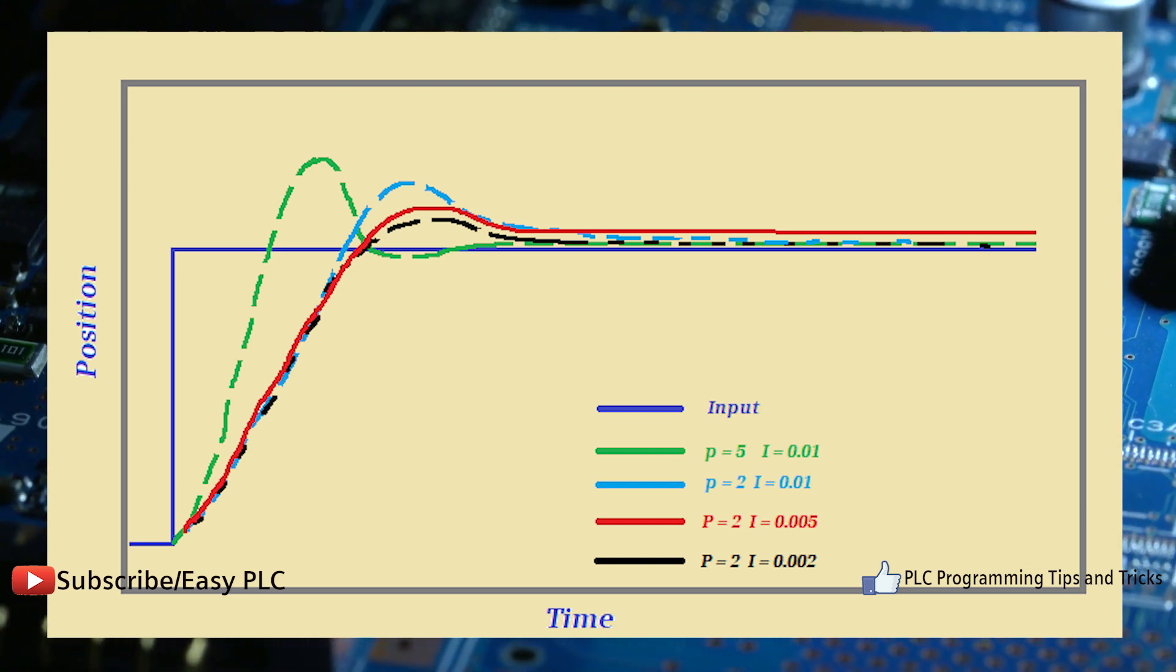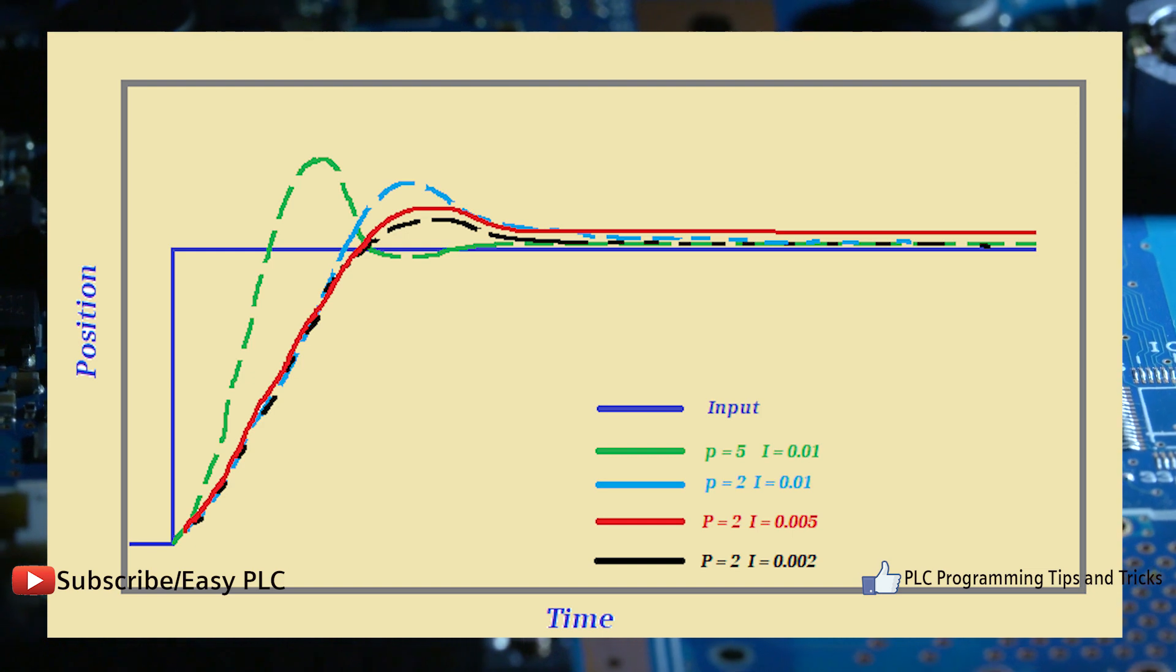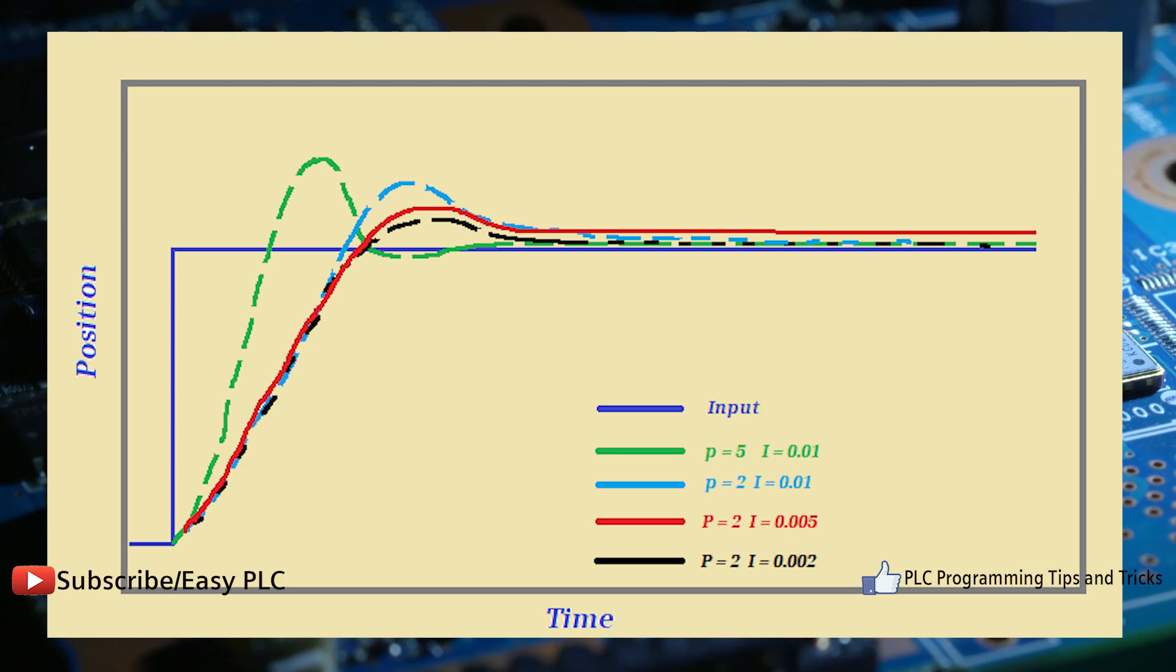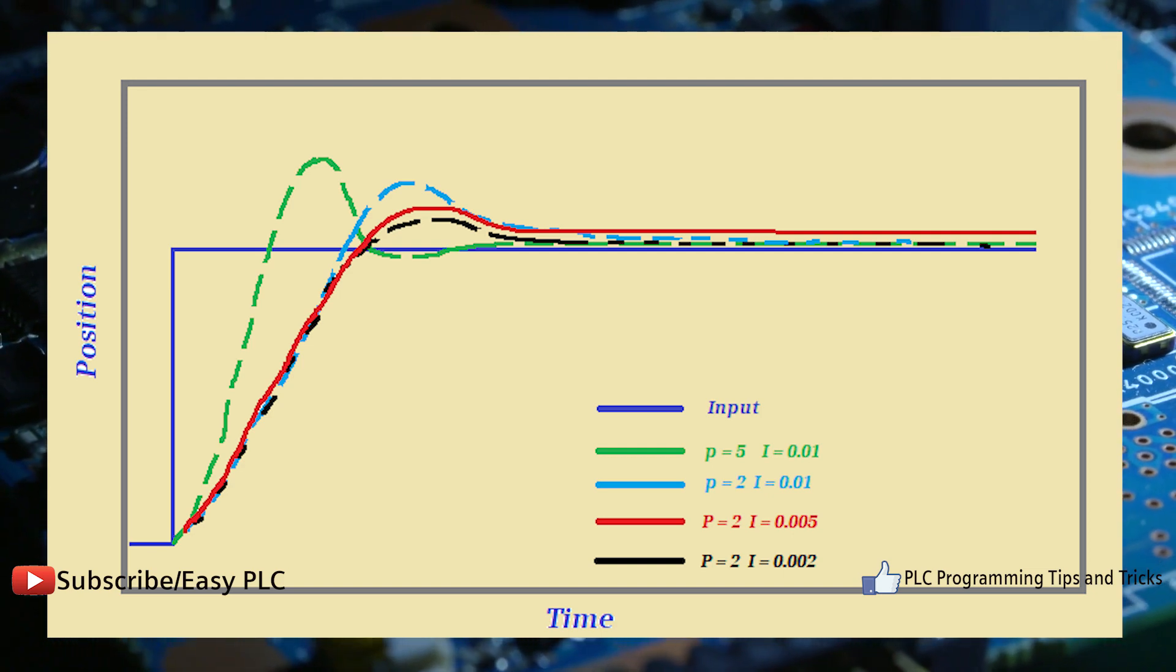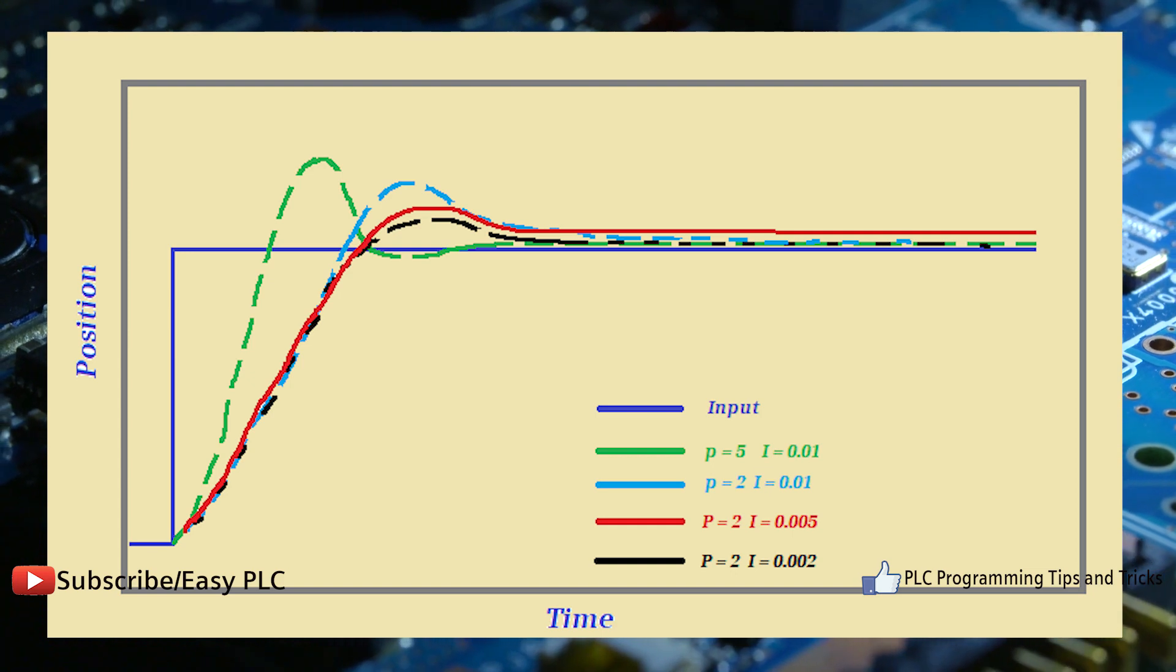Integral control decreases its output when negative error takes place. It limits the speed of response and affects stability of the system. Speed of the response is increased by decreasing integral gain I.